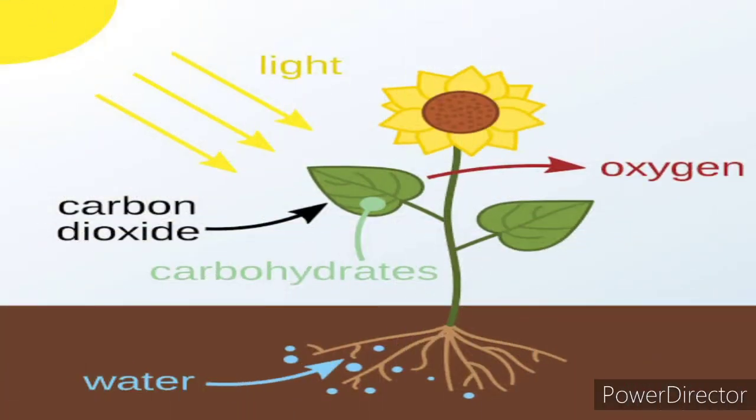This is a picture of how plants manufacture their food with the presence of sunlight, carbon dioxide, and water. What a beautiful picture! Can you see the leaf of this plant? What color is it? Yes, it's green.